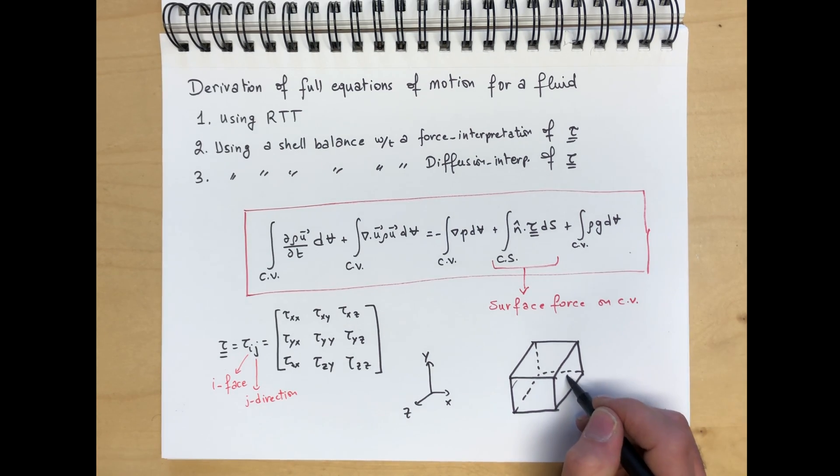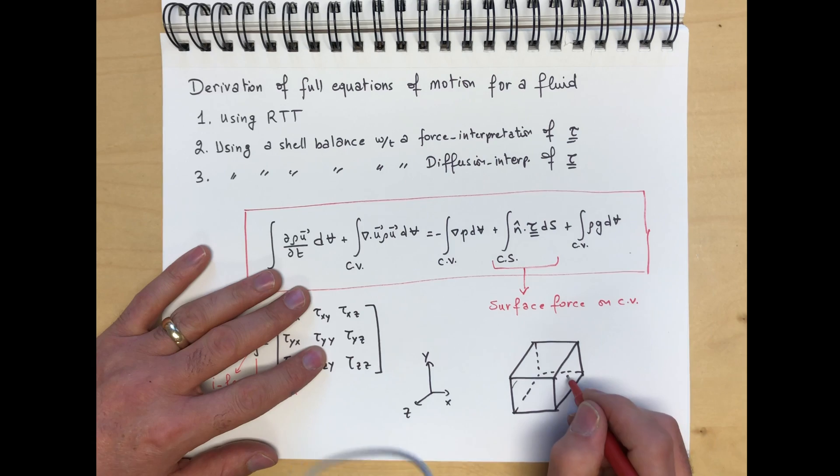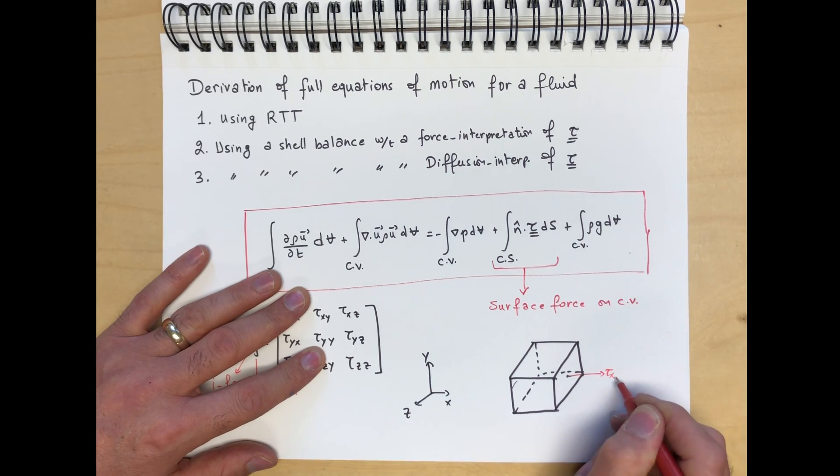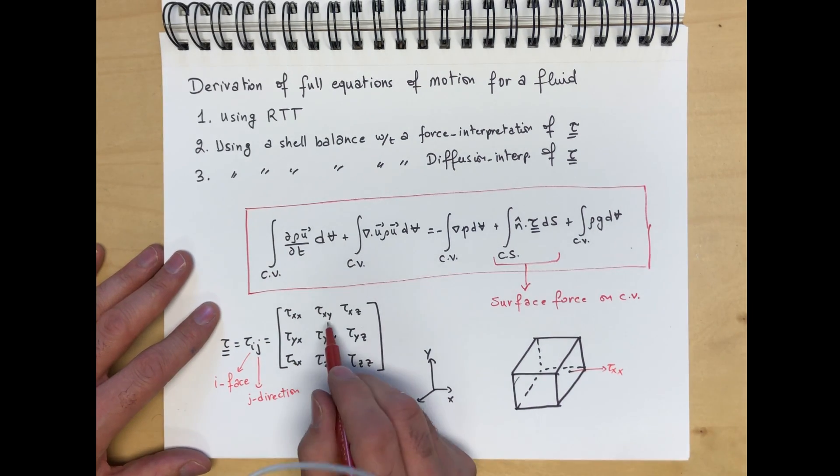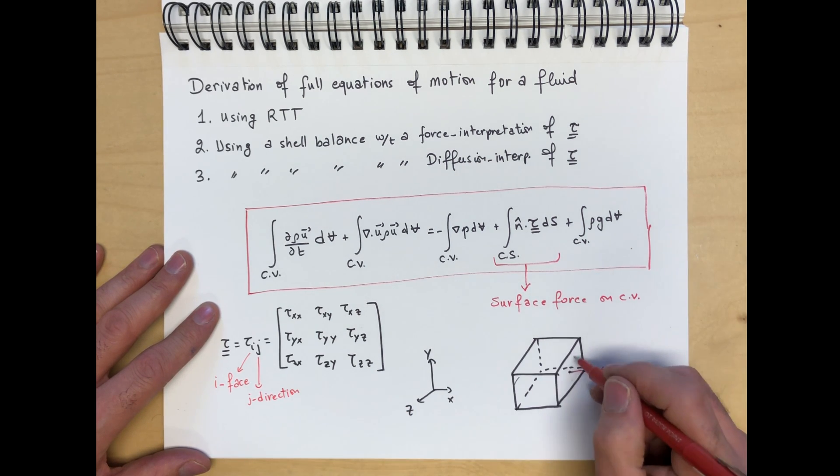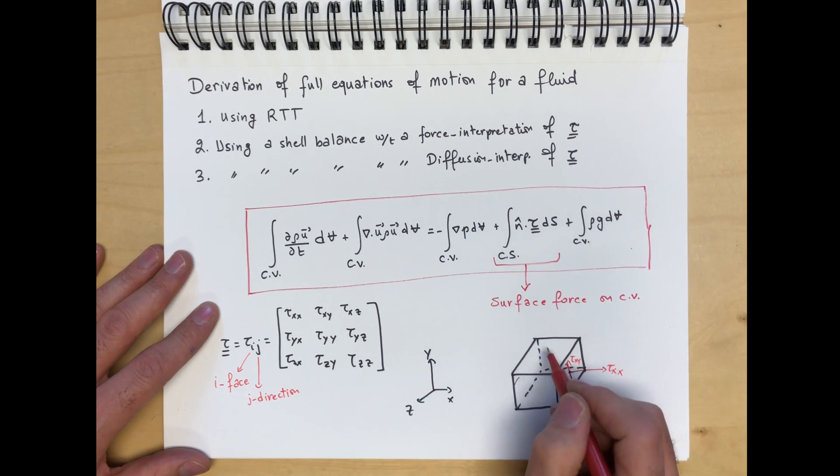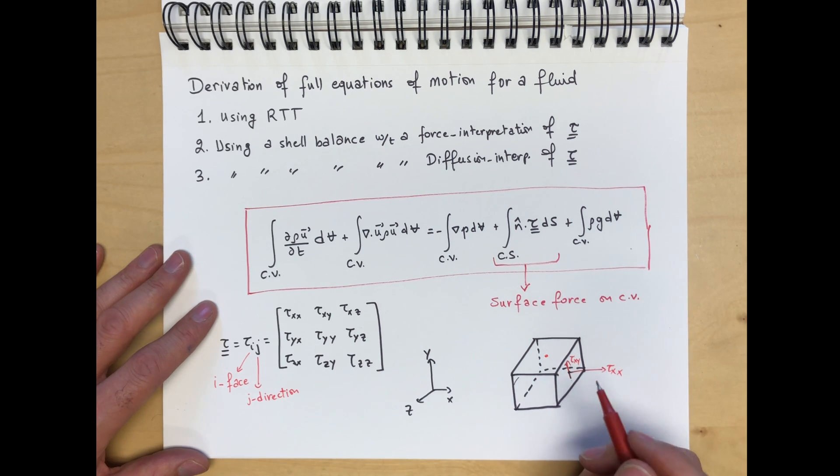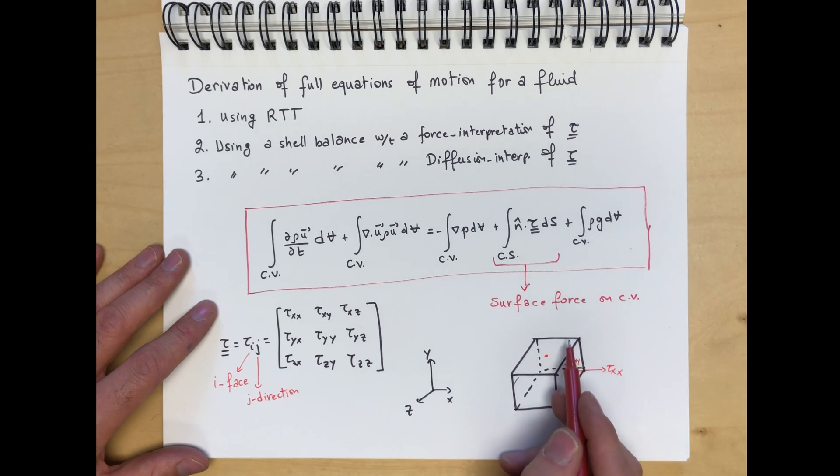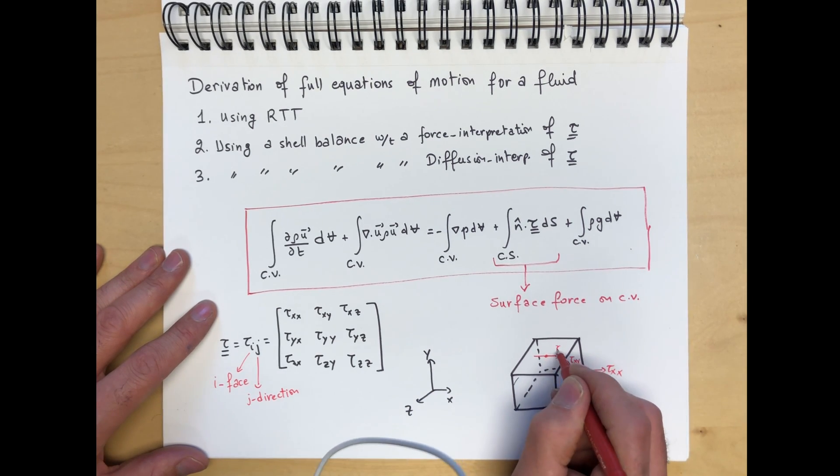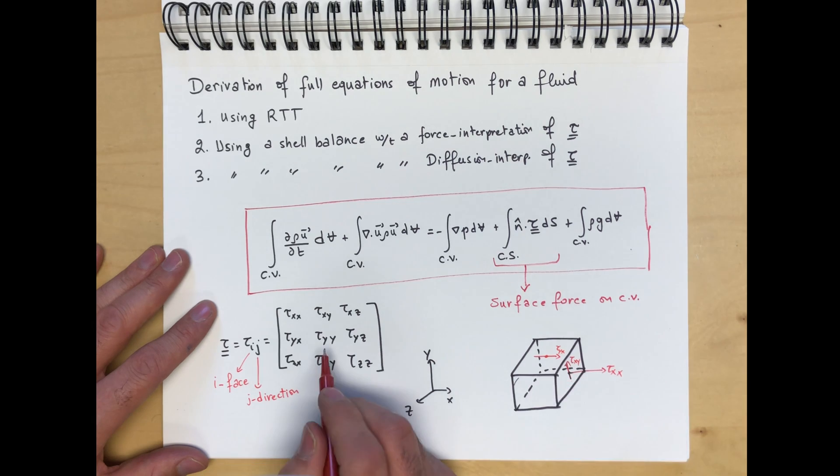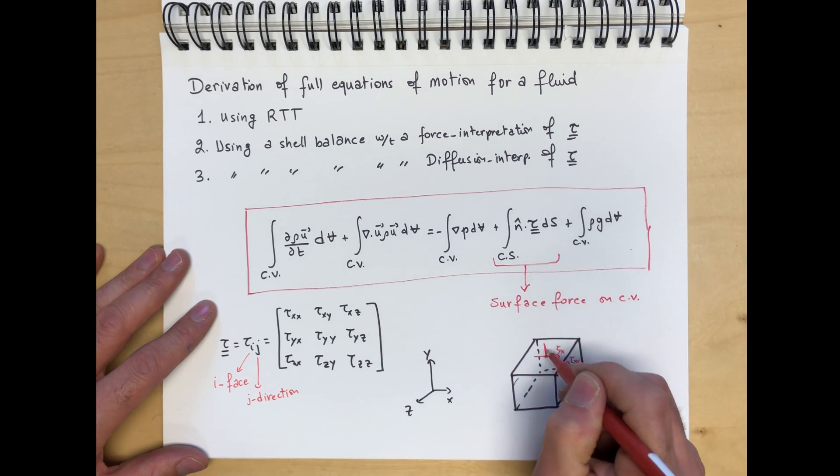For example, tau xx would be this little guy over here. This is tau xx. What is tau xy? It's the stress acting on an x-face in the y-direction. So, this is an x-face in the y-direction. This would be tau xy. What about tau yx? It's the stress acting on a y-face in the x-direction. This would be tau yx, tau yy acting on a y-face in the y-direction.